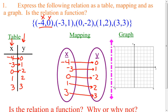Then, we are going to graph those ordered pairs. I am going to graph the point negative 4, 0; then negative 3, 1, so 3 to the left and 1 up; then 0, negative 2, not left or right at all, 2 down; then 1, 2, which is 1 to the right and 2 up; and 3, 3, which is 3 to the right and 3 up. So there's what it looks like. I took this relation and made a table of it, a mapping of it, and a graph of it.